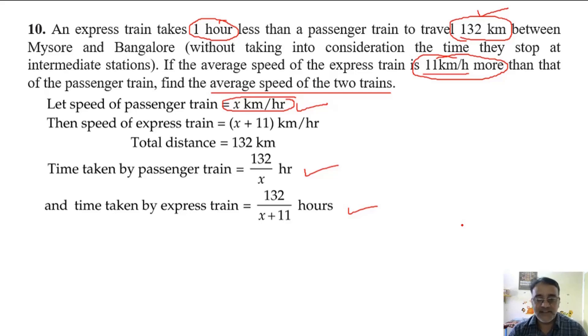So 132 by x we should write first, minus 132 by x plus 11 equals 1.